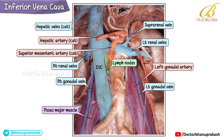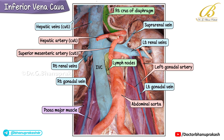The left gonadal artery originates from the abdominal aorta. Finally, the right crus of the diaphragm can be seen at the upper left part of the inferior vena cava.